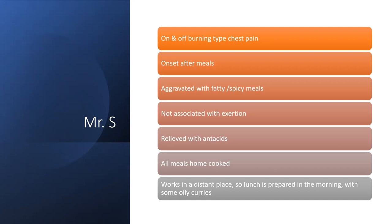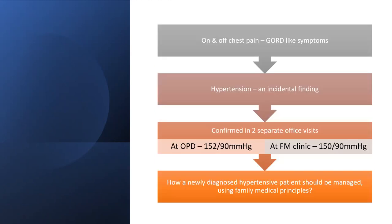His presenting complaint was on-and-off burning type chest pain. The onset was after meals, aggravated with fatty and spicy meals, not associated with exertion, and relieved with antacids. He had home-cooked meals but since he works at a distant place, lunch is prepared in the morning with oily curries. He had regurgitation, suggesting gastritis or gastroesophageal reflux. The hypertension was an incidental finding; at the family medical clinic his BP was also 150/90.